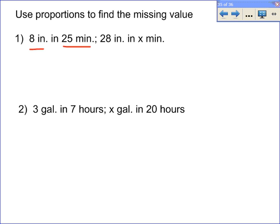The first scenario says 8 inches in 25 minutes, and so that's your first ratio. That's saying that whatever this is can do 8 inches - maybe it's a snail or something like that - it can travel 8 inches in 25 minutes. And then we want to find out how long it would take that same thing to go 28 inches.